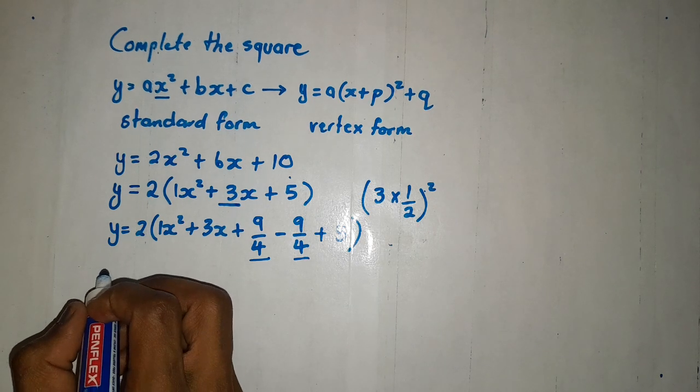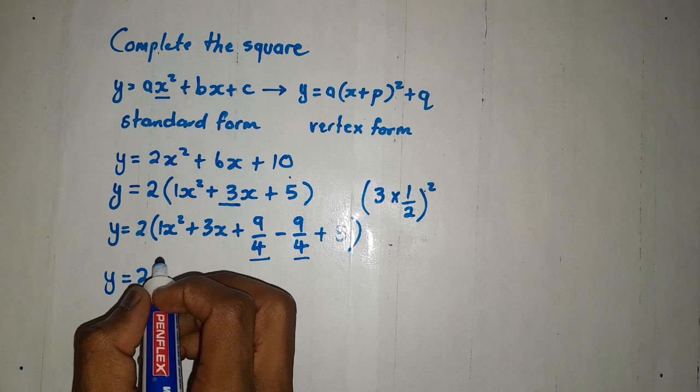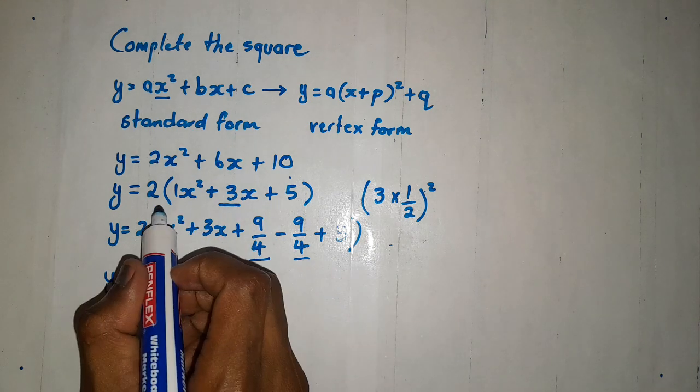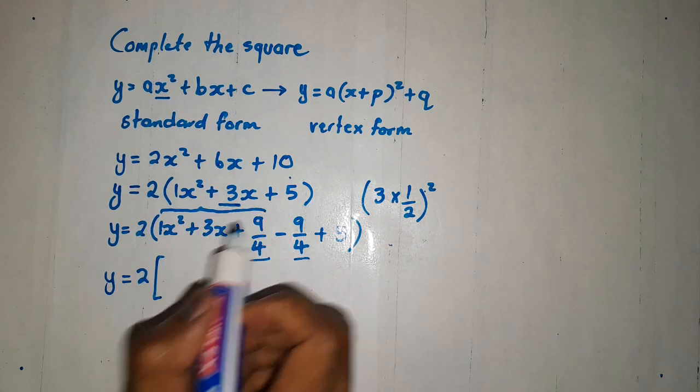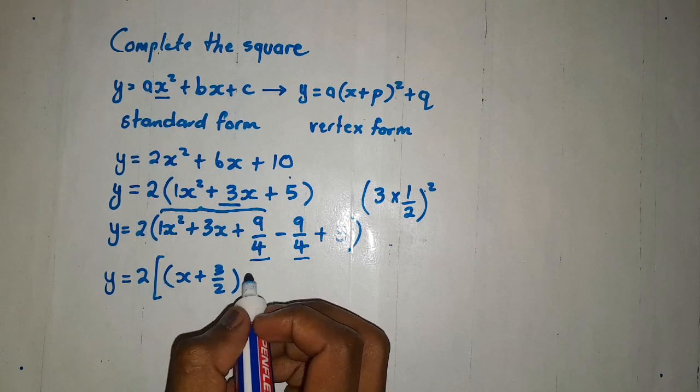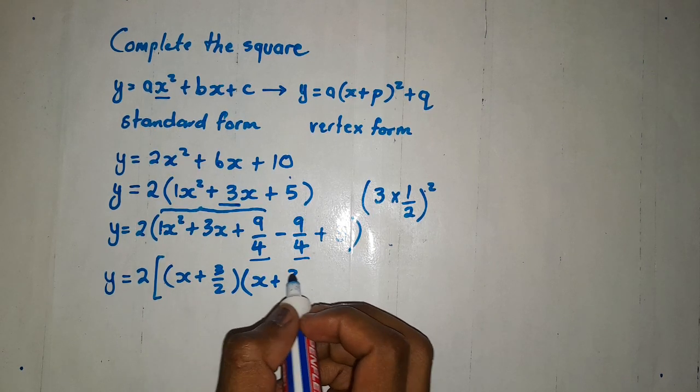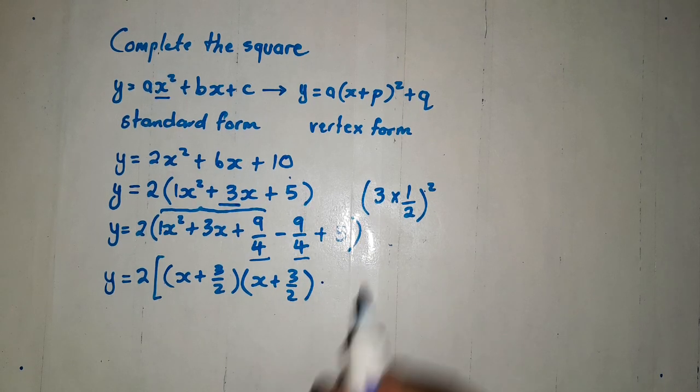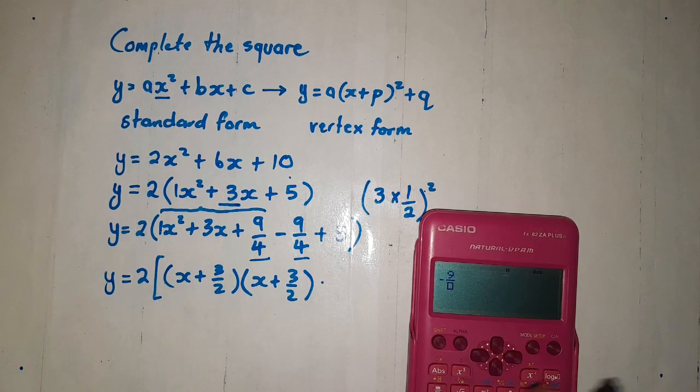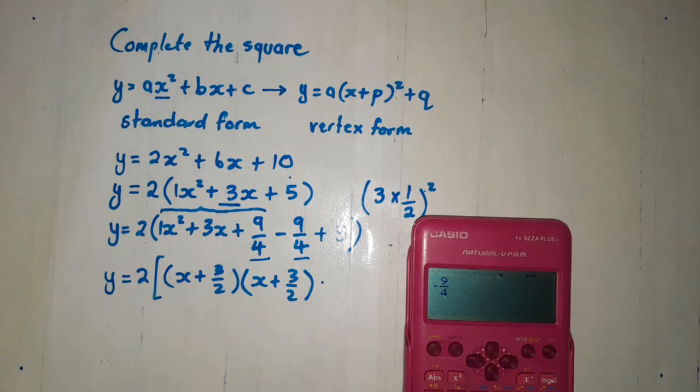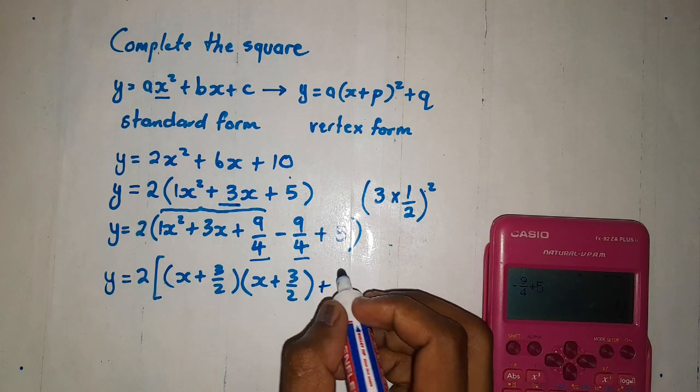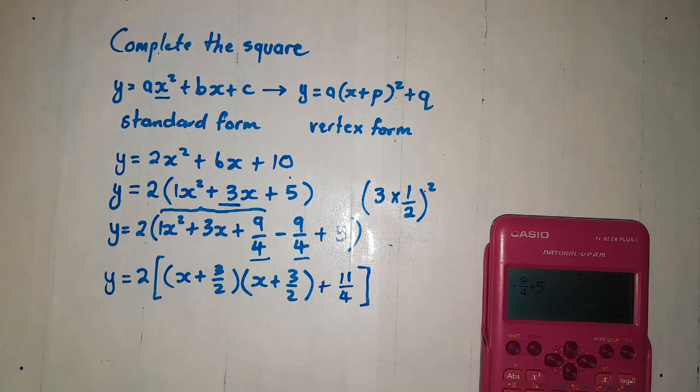Then, let's continue now. We are going to factorize this trinomial from 1 up until this trinomial, we are going to factorize it. When you factorize, you are going to get x plus 3 over 2, close bracket, x plus 3 over 2, then close it. Then, we need a calculator for this one. Say negative 9 over 4. Then we have plus 5. We get 11 over 4. Then let us close the bracket.